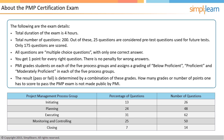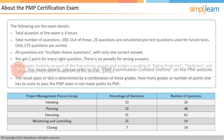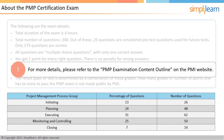The questions in the PMP exam are related to various aspects of project management. These aspects, known as project management process groups, are project initiating, planning, executing, monitoring and controlling, and closing. The percentage of questions and number of questions that may appear from each process group are listed in the given table. For more details, please refer to the PMP examination content outline on the PMI website.